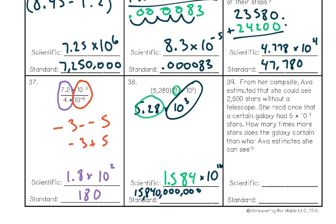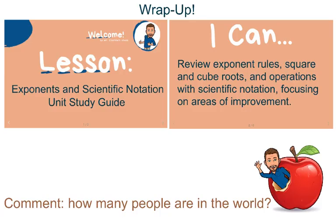Number thirty-nine: Ava estimated she could see 2,500 stars without a telescope, while a certain galaxy has 5 times 10 to the eleventh stars. 'How many times more' means divide. Write 2,500 as 2.5 times 10 to the third. Divide the number parts: 5 divided by 2.5 is 2. Subtract the exponents: 11 minus 3 is 8. Final answer: 2 times 10 to the eighth, which is 200 million.